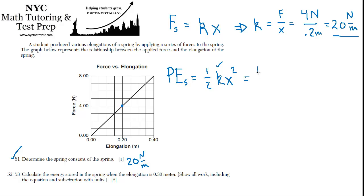So we should be able to find the potential energy of the spring. Let's go ahead and plug it in. So we have 0.5, 20 newtons per meter, and 0.3 meters of elongation, that's being squared.